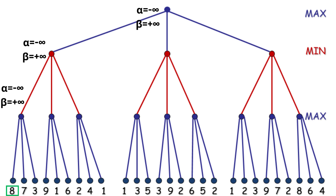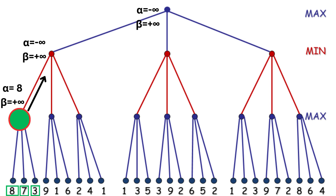Let's explore the first terminal node whose value is 8. We will compare this value with alpha's current value which is negative infinity. The maximum among them will be updated at alpha. As 8 is greater than minus infinity, alpha's value is now equal to 8. Alpha is not greater than or equal to beta, so we will proceed. We explore the next node — it is not greater than alpha's current value, so we proceed further. The next terminal node is 3, which is again less than alpha's current value, so alpha's value will not be updated. We now have alpha equal to 8 at this node. Since we have completely explored all children at this node, we can propagate this value to the above level.